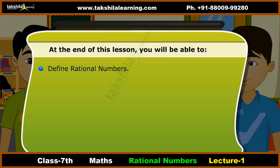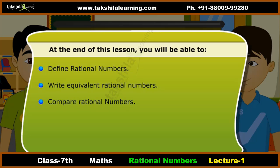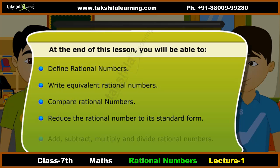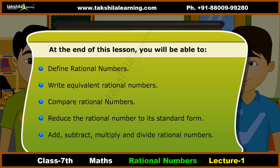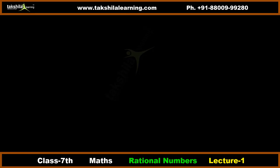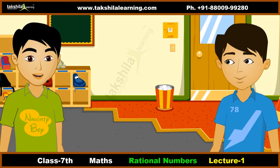Amit says he did not understand, so they go through the objectives. At the end of this lesson, you'll be able to: define rational numbers, write equivalent rational numbers, compare rational numbers, reduce a rational number to its standard form, and add, subtract, multiply, and divide rational numbers.